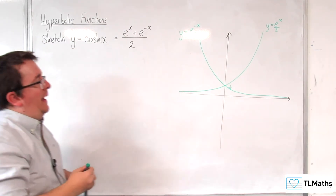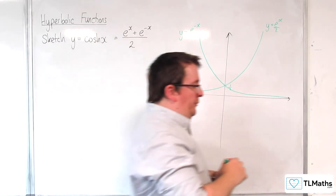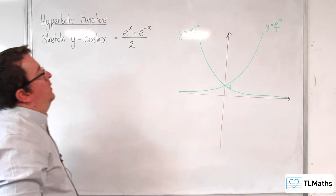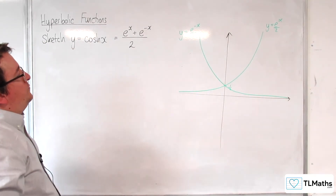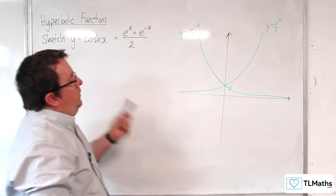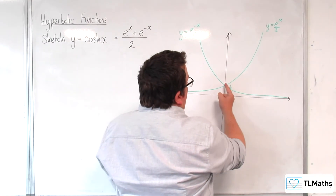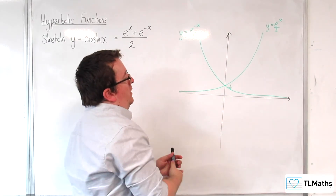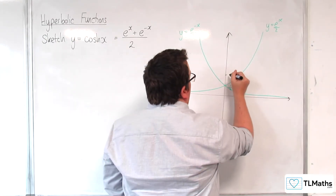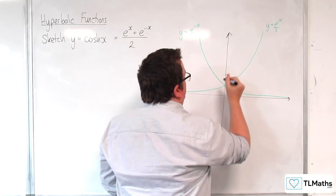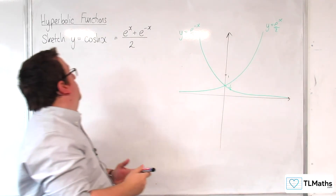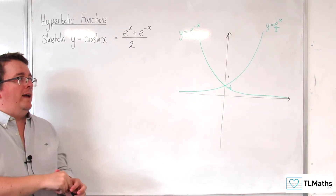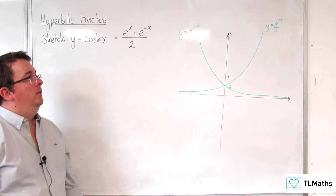What we're going to be doing is adding those two together. So at x equals 0, we're going to get one half plus one half, which is 1. So y equals cosh of x goes through (0, 1).